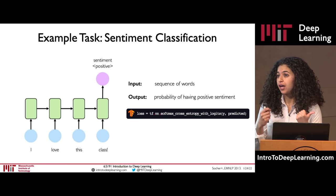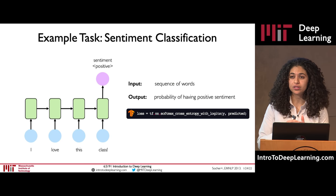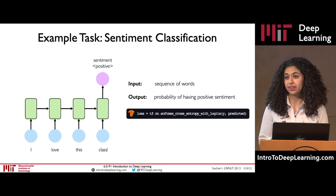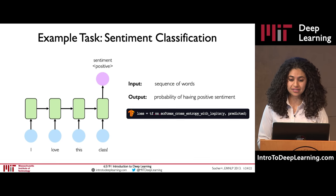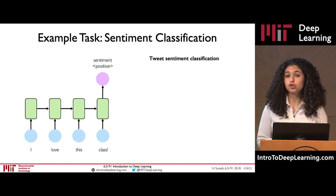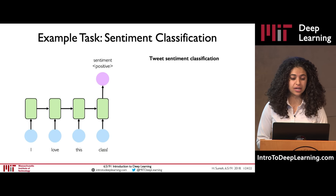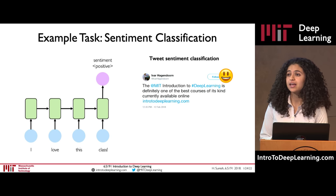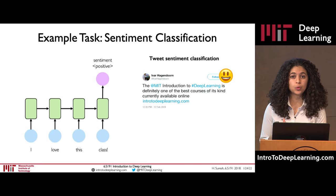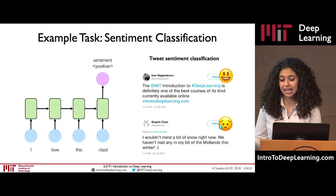As another cool example, we can also do a classification task where we take an input sequence and try to predict a single output associated with that sequence — for example, taking a sequence of words and assigning an emotion or sentiment. One use case is tweet sentiment classification: training a model on a bunch of tweets from Twitter and using it to predict a sentiment associated with given tweets. We can train an RNN to predict that a tweet about our course has a positive sentiment, but that a tweet about winter weather has a negative sentiment.